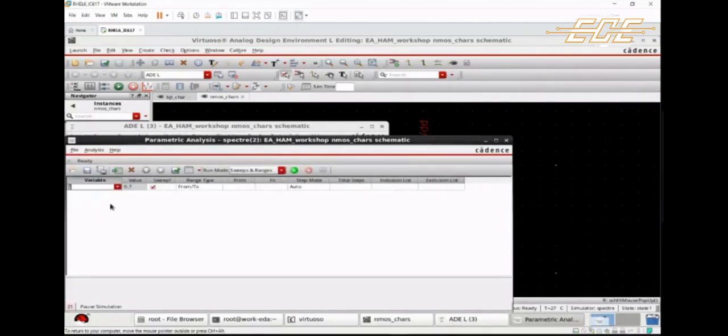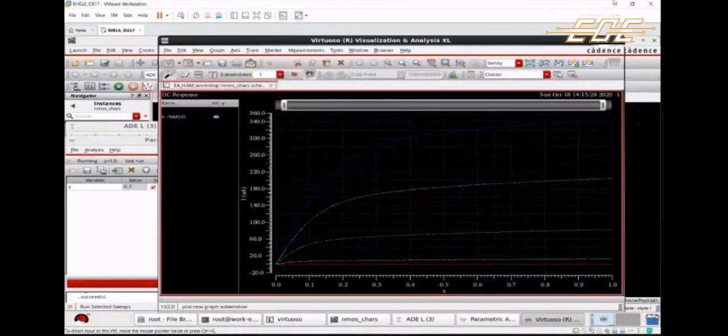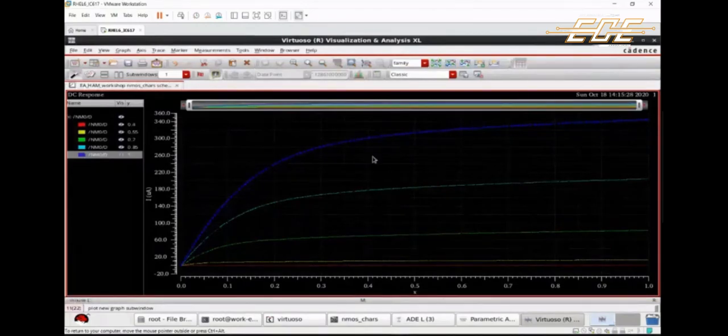We start with setting design variables and DC sweep range. Now select the signal pins you want to visualize on the waveform viewer. We're all set and here we have our first ID versus VDS graph.